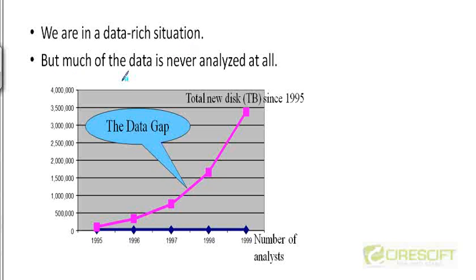The problem is that much of the data being generated is never analyzed at all. In the plot shown below, the purple curve tells you how much data is being generated across time — starting from 1995 to about 1999, the amount of data was increasing in an almost exponential way. This plot is taken from the slides of a popular textbook on data mining by Tan, Steinbach, and Kumar, and their plot stops at 1999. But you can imagine this trend continues beyond 1999 right up till today. The key point is the trend: there is an exponential increase in the amount of data being generated.